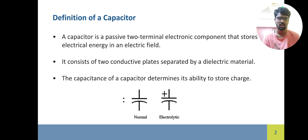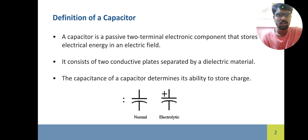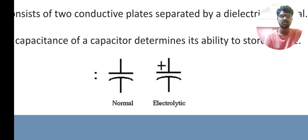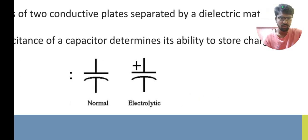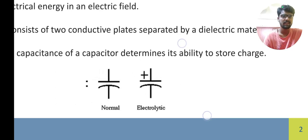You can pause the video and read the definition by yourself, but the understanding is very simple — it basically stores energy in an electric field. The symbol of a capacitor in a normal electric circuit is as shown in the figure. In an electrolytic capacitor, it is somewhat like two plates with a plus sign above it.